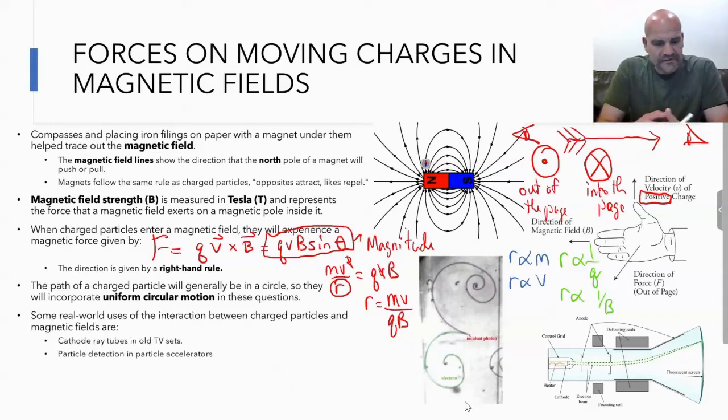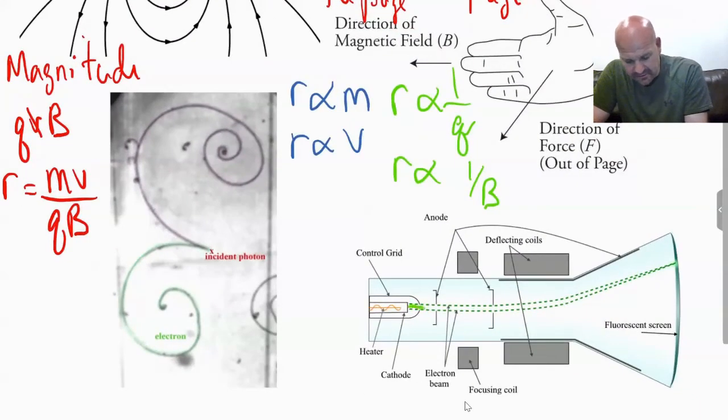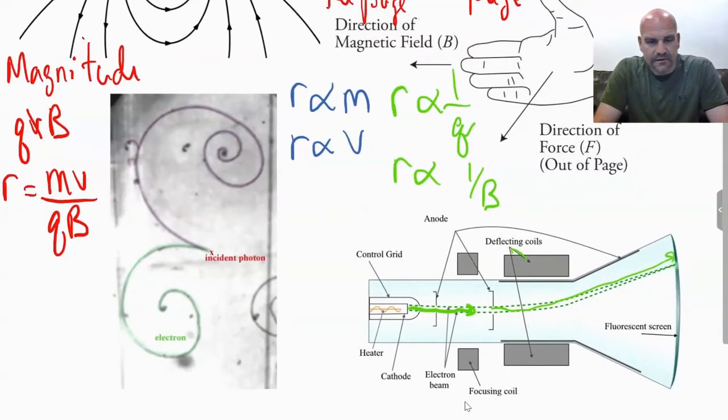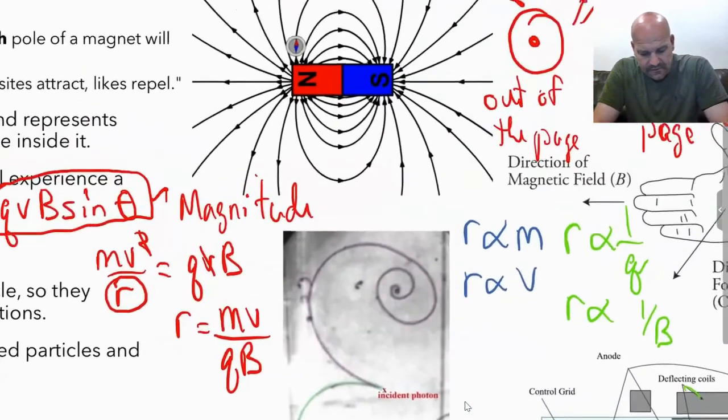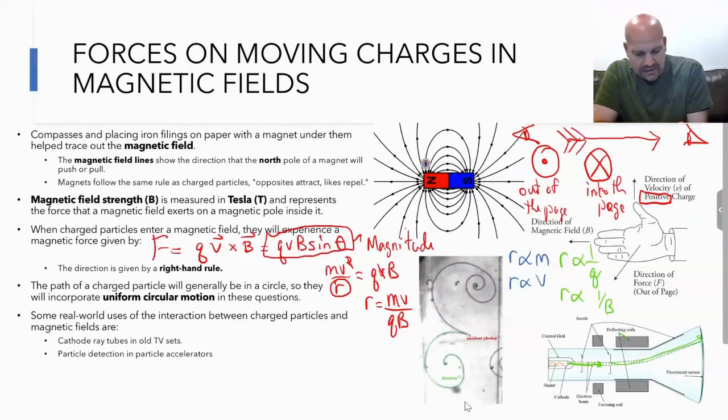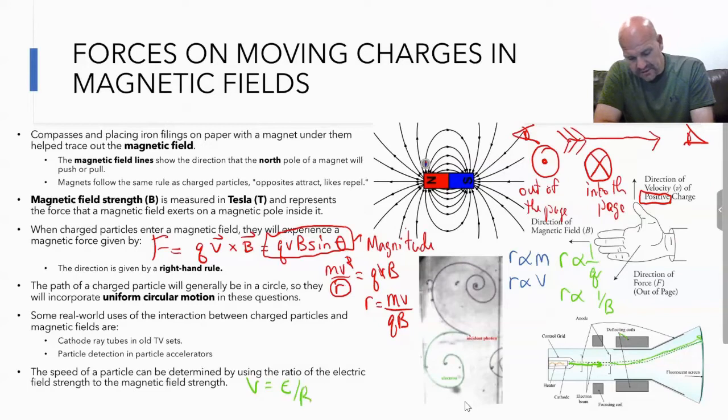Some real-world uses of this interaction include the old school TVs or monitors, those cathode ray tubes. You can see here's a diagram for a cathode ray tube. It shoots out an electron, and you have these coils that deflect them into the screen to light up. You also have cloud chambers where you can see particles collide. Another real-world example would be particle detection in particle accelerators.